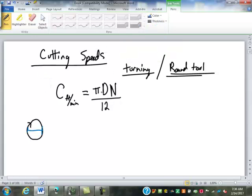You guys do diameter times RPM over 3.82 or something like that? That's just the 12 divided by pi.